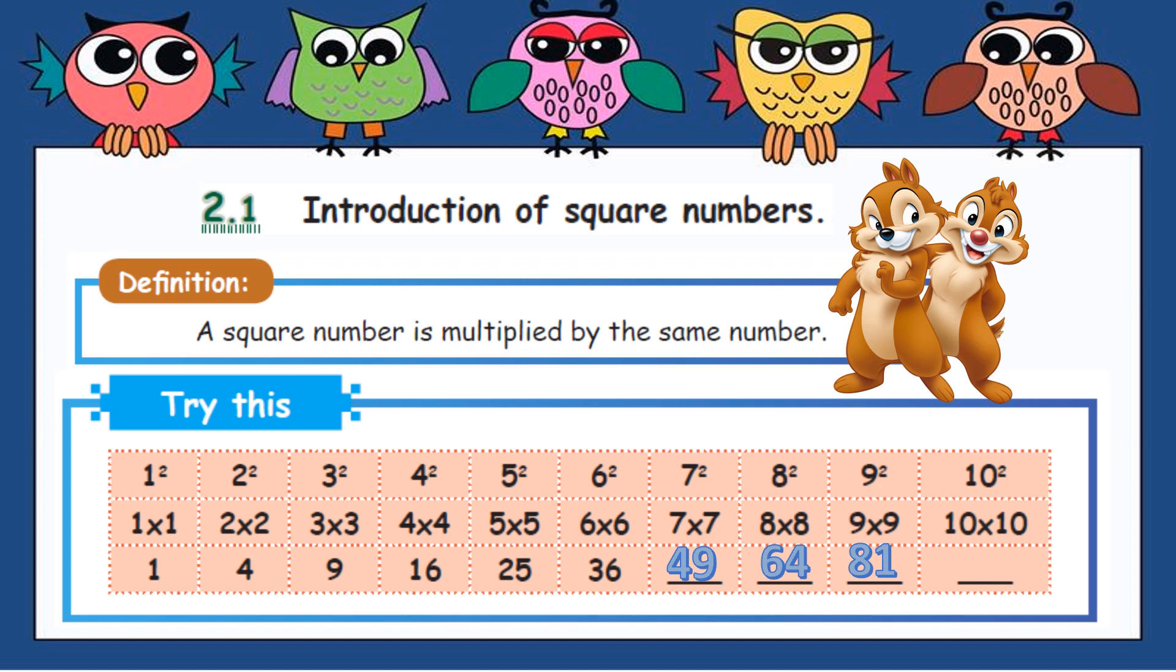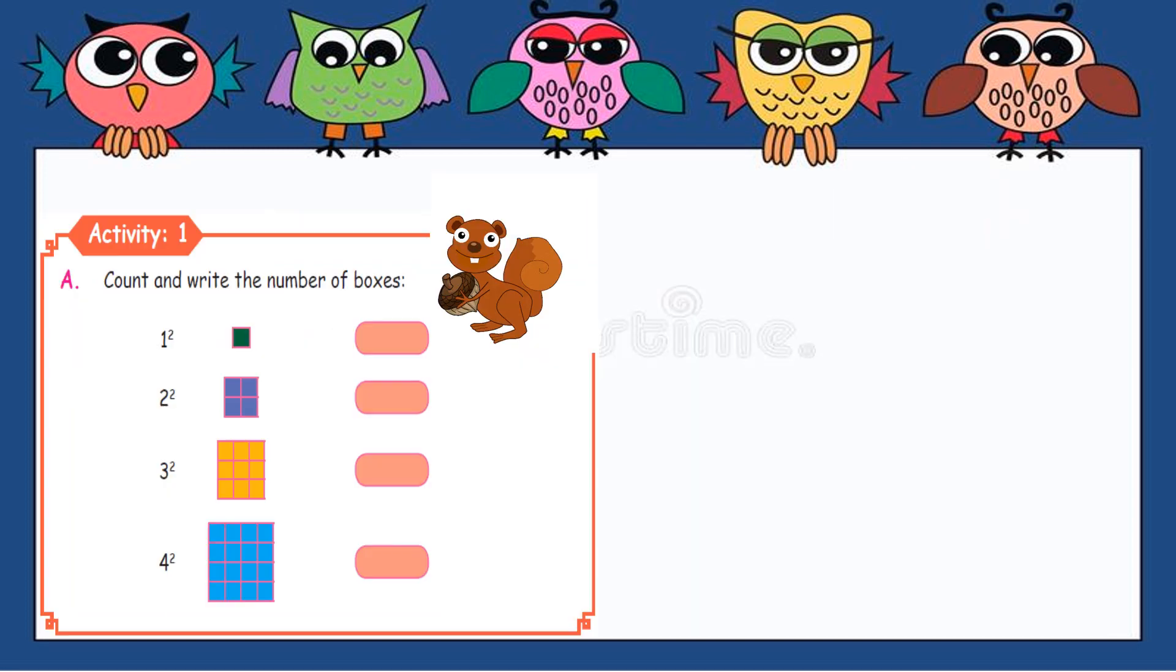Okay, let us see the activity. Activity one: count and write the number of boxes. So here we are going to find out the boxes. In first we have only one, isn't it? In second we have four boxes, square boxes. So here in this, three times three is nine, nine is the answer.